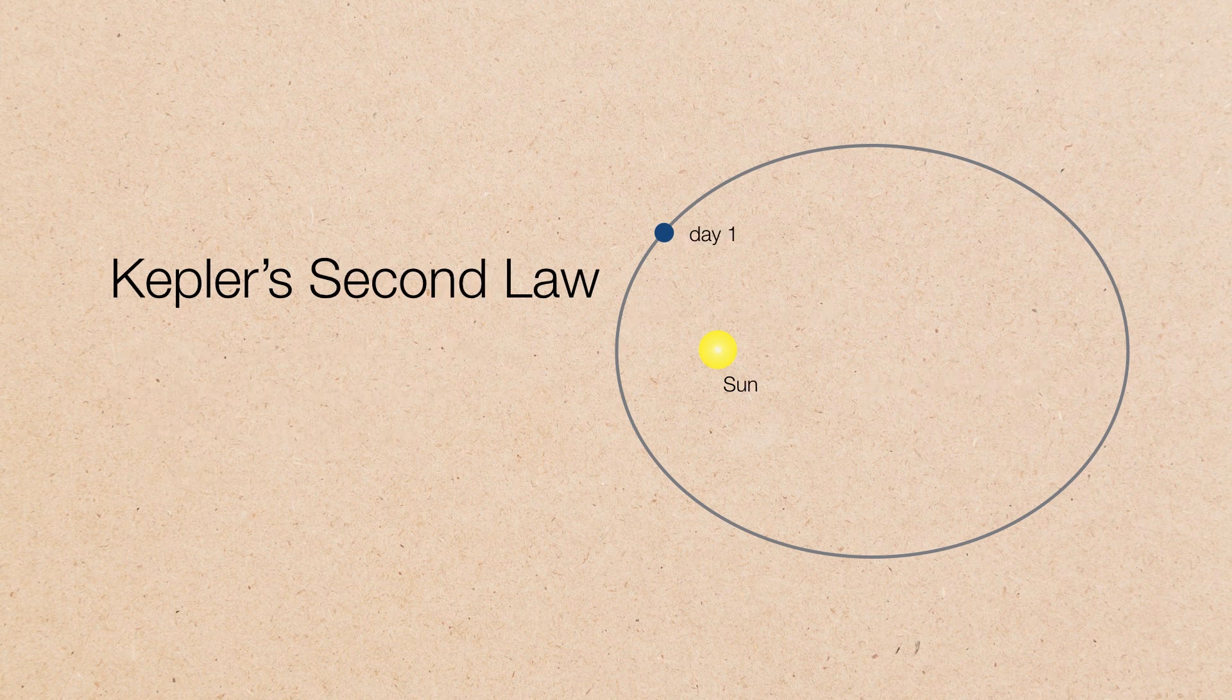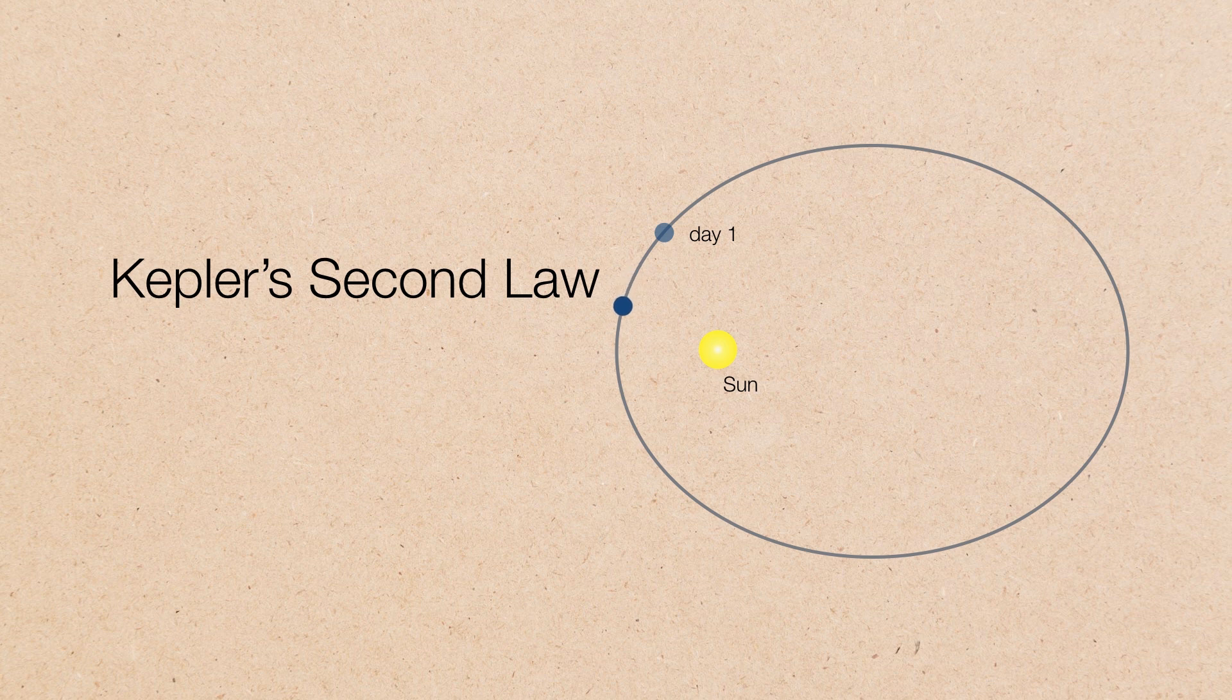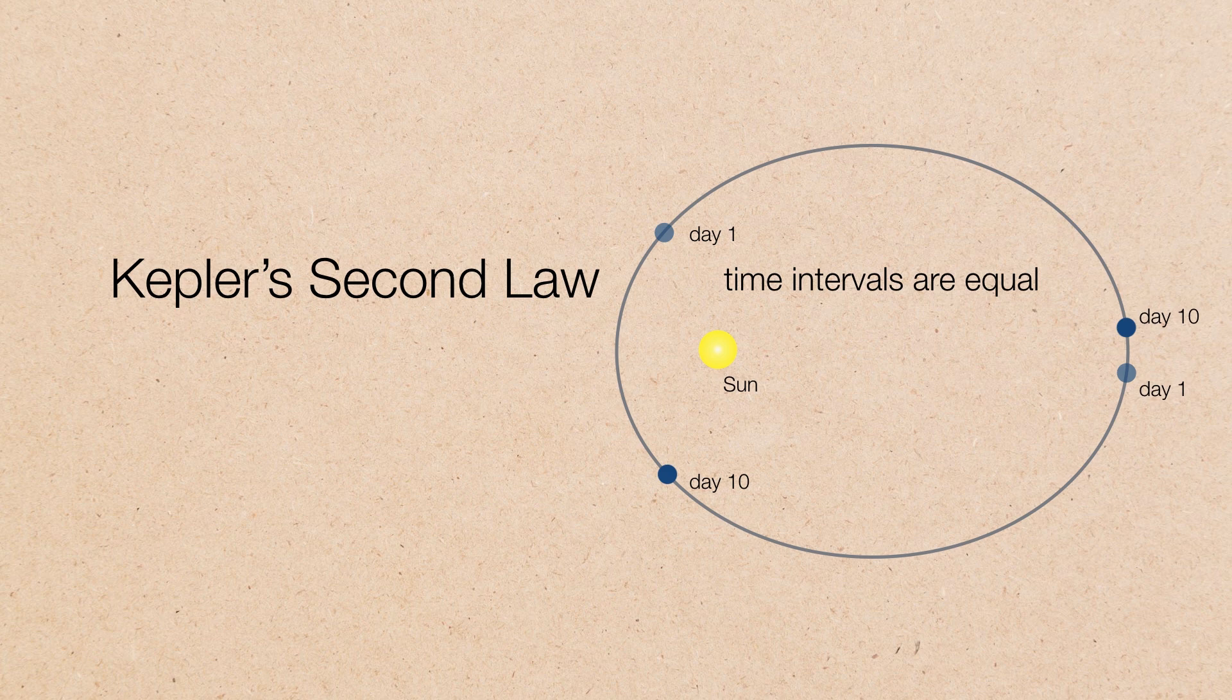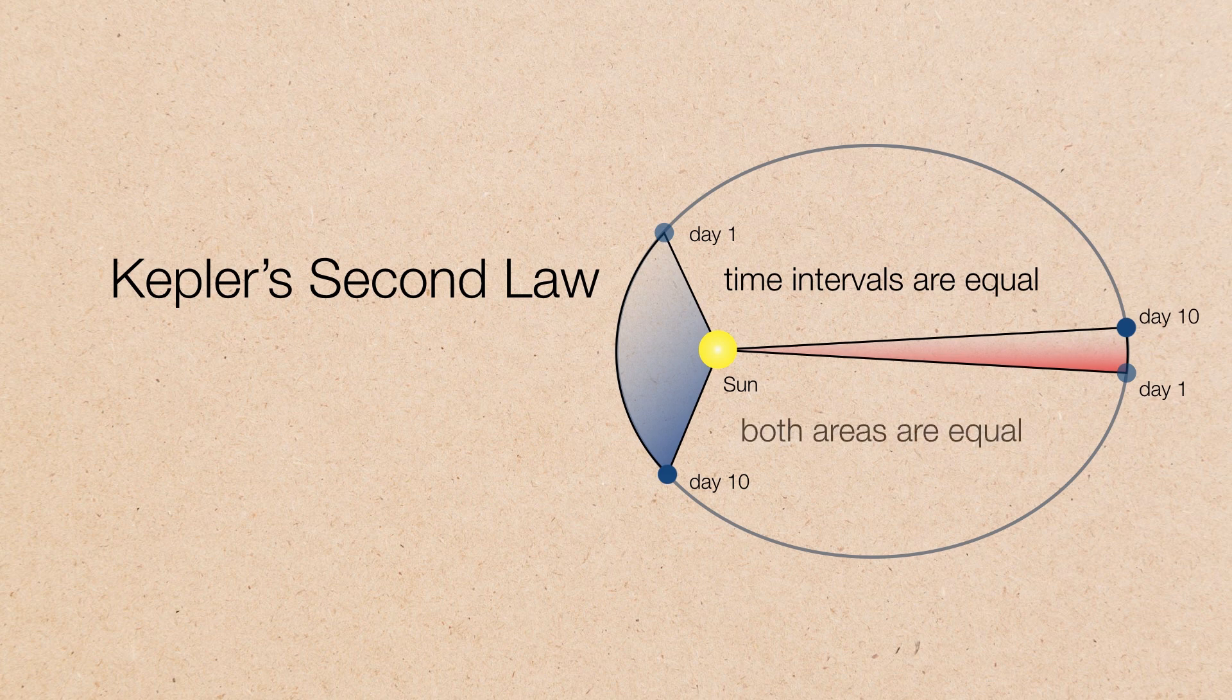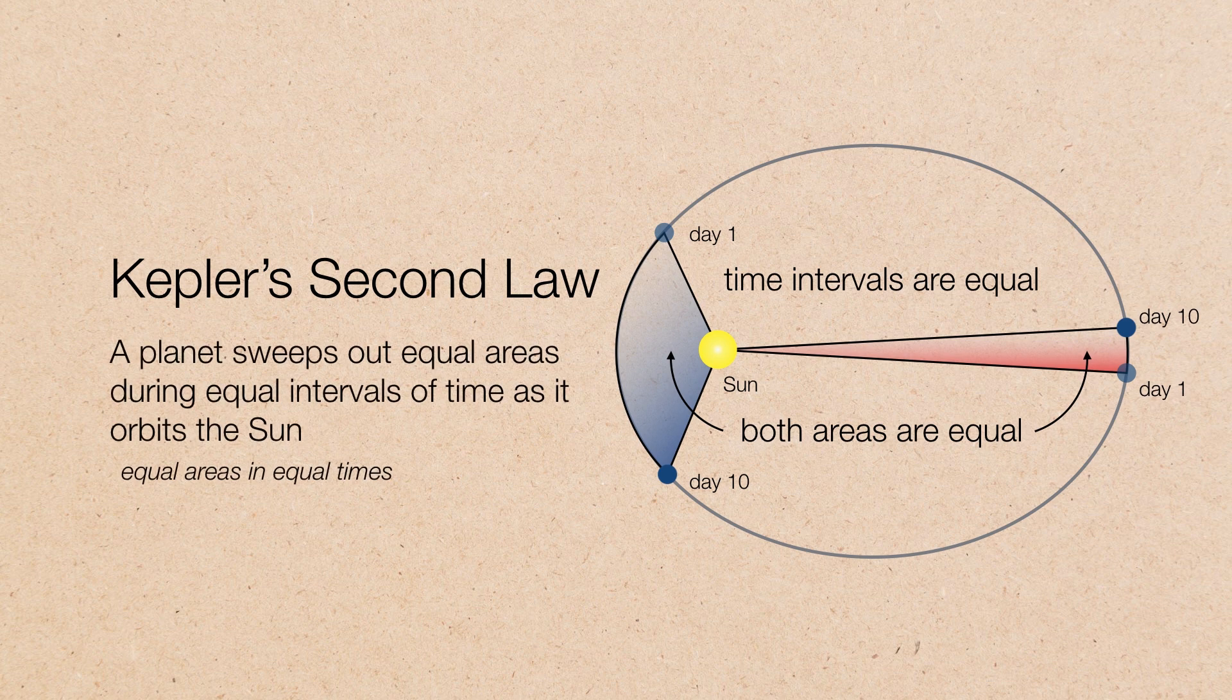So Kepler's second law states that if we allowed a planet to come past the sun, let's say in this case, near perihelion over a 10-day period, and if we were to look at that same planet towards aphelion over a same 10-day period, the time intervals are going to be equal to each other. Now, if we do what comes naturally and play connect the dots between the perihelion pass, we can get some kind of an area, and we can do the same thing with the aphelion pass. And if we measure the area of these two triangles, it turns out that both of these areas are equal.